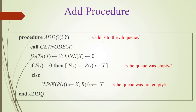Now we will see the add procedure — we are adding y to the i-th queue with 2 parameters. We get the free node at location x. We assign the value y to the data field and the value 0 to the link field. If the rear points out and the link field is 0, that means there is no more node. There are 2 cases: the queue is already empty and we are adding a new node, or the queue is not empty and we are adding a new node. If the queue is empty, r of i is assigned to x and f of i is also assigned to x — both pointing to x. If the queue is not empty, x will connect to the rear link and then x will be made the new rear.